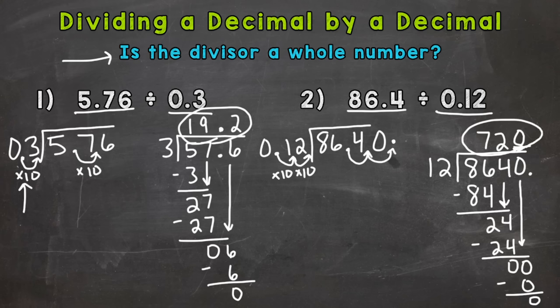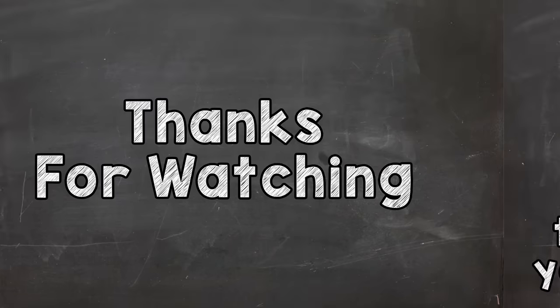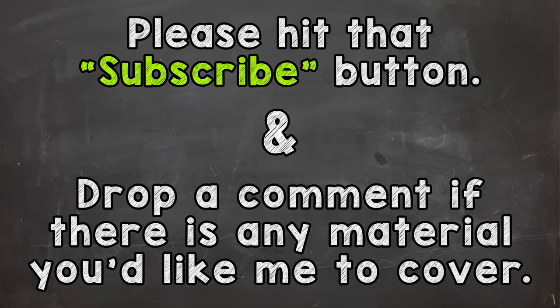There you have it — that's how you divide a decimal by a decimal. Remember: is the divisor a whole number? If not, multiply it by a power of 10 to make it whole. Whatever you do to the divisor you must do to the dividend. Then rewrite your problem, go through the division process, and you'll get the correct answer. Thanks so much for watching — until next time, peace!